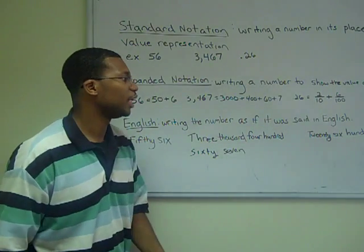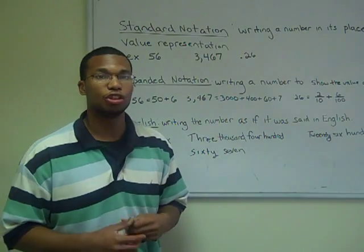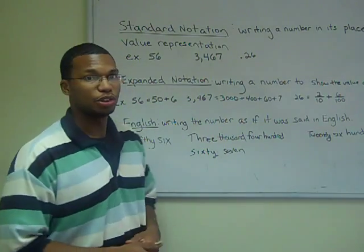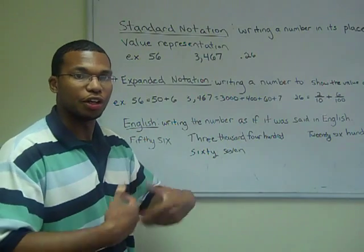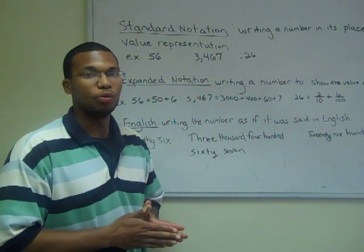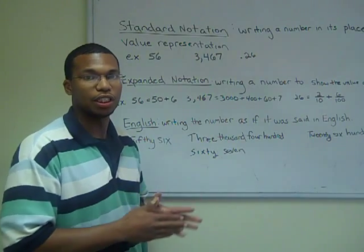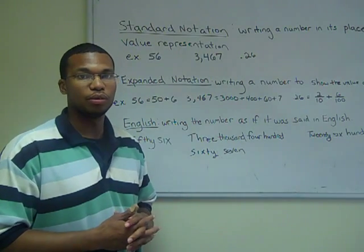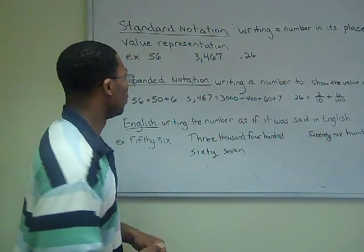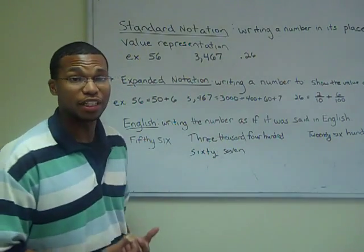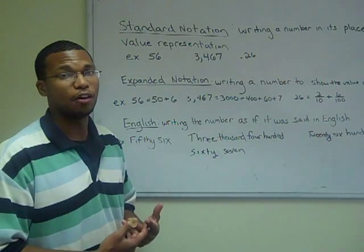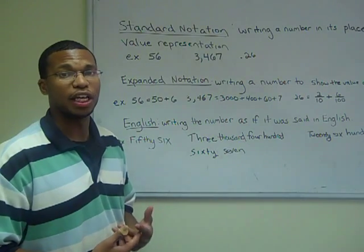In expanded notation, it involves writing a number to show the value of the digit. Earlier in the place value representations, we put each digit into a particular group. Those particular groups represented some value of 10. Expanded notation shows the actual values in itself with the multiplication involved.